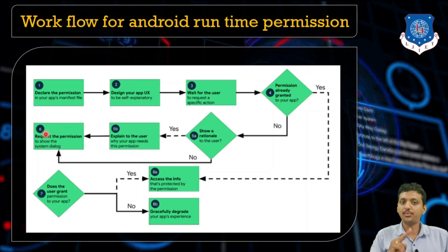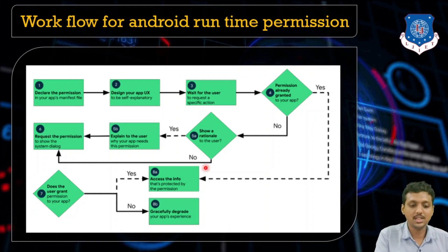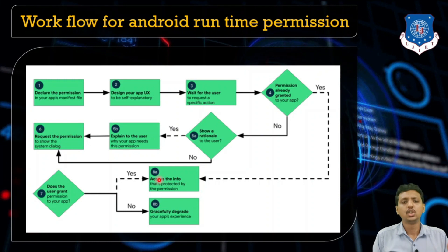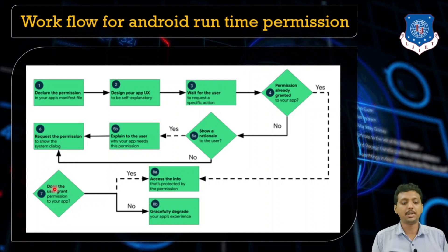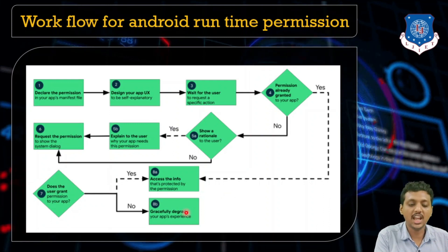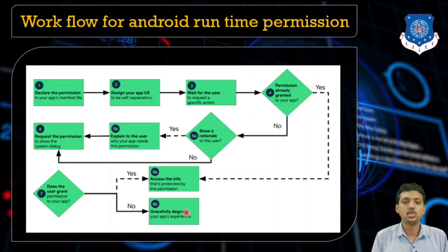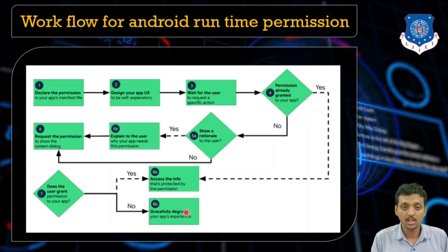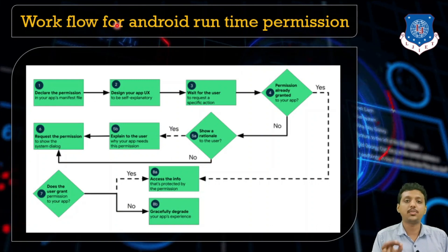After showing the rationale, request the permission again to show the system dialog. If the user clicks yes, allow the developer to access the data. If the user says no again, then you should gracefully degrade your application — either grant a limited experience or stop asking. Never irritate the user by asking for the same permission again and again. This is the workflow we will implement in our next video tutorial.